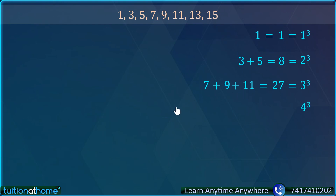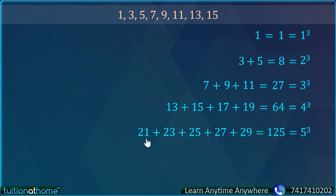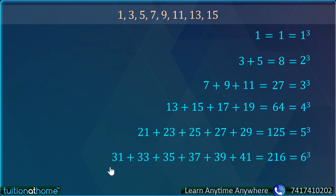So 4 cube will start from 13, using 4 numbers: 13 plus 15 plus 17 plus 19. Because 1 cube starts from 1 (one number), 2 cube starts from 3 with 2 numbers: 3 plus 5; 3 cube starts from 7 with 3 numbers: 7 plus 9 plus 11. If I say 5 cube = 125, it will start from 21 using 5 numbers: 21 plus 23 plus 25 plus 27 plus 29. And 6 cube = 216 will start from 31 using 6 numbers: 31 plus 33 plus 35 plus 37 plus 39 plus 41. What a beautiful pattern for cube numbers!